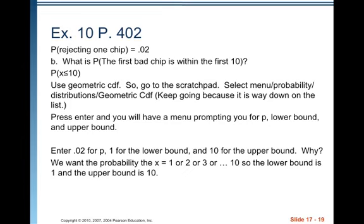Go to the scratch pad, select menu, probability, distributions, but this time select geometric CDF. Keep going because it's way down on the list. Press enter, and you will have a menu prompting you for P, lower bound, and upper bound. Enter 0.02 for P, 1 for lower bound, and 10 for upper bound. We want the probability that X equals 1 or 2 or 3 or 4 or 5 or 6 all the way up to 10. So the lower bound is 1 and the upper bound is 10. When you find that probability, the probability X is less than or equal to 10 is 0.1829.